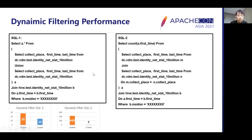These examples show the performance improvement when using dynamic filters. For SQL2 in particular, performance is much better due to dynamic filtering: the data volume is reduced during table scan on the right-side table in DC2, and the data volume participating in the join operation in DC1 is also reduced.